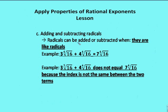When adding and subtracting radicals, they can only be combined when they are like radicals — meaning the same radicand and the same index. For example, you cannot add two radicals if the index differs even if the radicand is the same. But 3 times the 4th root of 16 plus 4 times the 4th root of 16 equals 7 times the 4th root of 16.